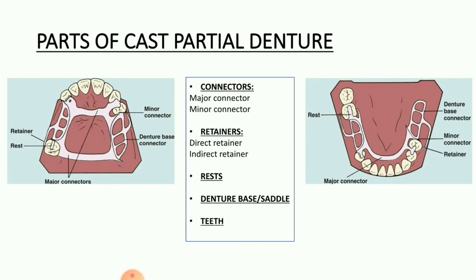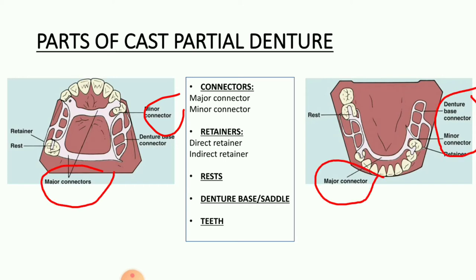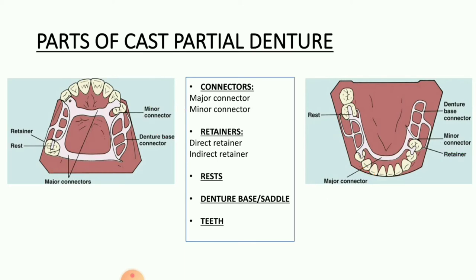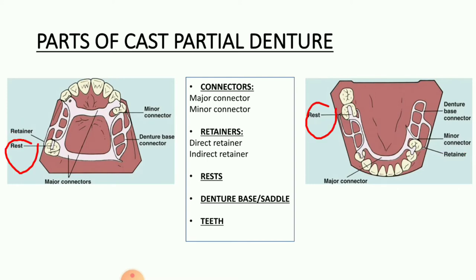Coming on to the parts of cast partial denture, we have connectors, which connect the various components. In connectors we have major connector and minor connector. In the case of retainers, their main function as the name suggests is they help in the retention of the prosthesis. Under the retainers we have direct retainer and indirect retainer, then we have rests, denture base, and teeth. In the figure we have all the components labeled, and in today's video we will be seeing the main function of each and every component.